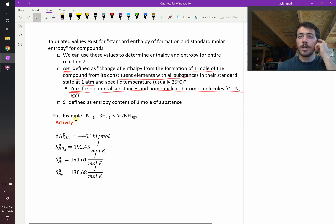Let's say we'd like to calculate the change in enthalpy and the change in entropy for this reaction from nitrogen gas reacting with hydrogen gas to form ammonia. So how do we do this?